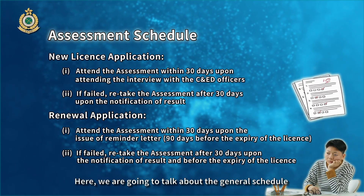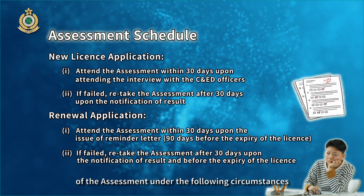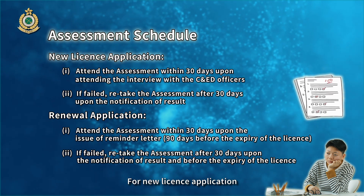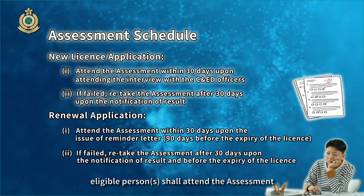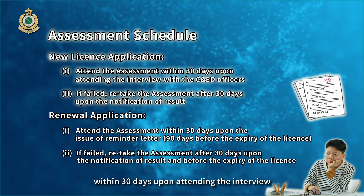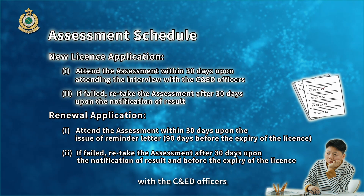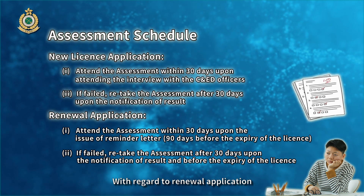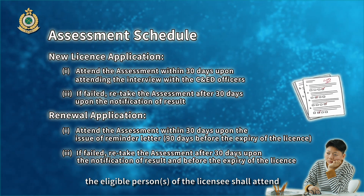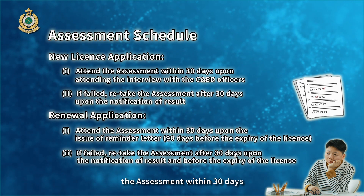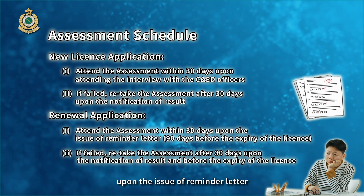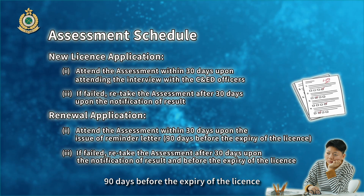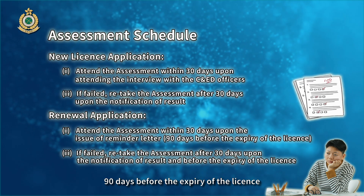Regarding the general schedule of the assessment: for a new license application, eligible persons shall attend the assessment within 30 days upon attending the interview with the CNED officers. With regard to a renewal application, the eligible persons of the licensee shall attend the assessment within 30 days upon the issue of the reminder letter. The reminder letter would be delivered to each licensee 90 days before the expiry of the license.